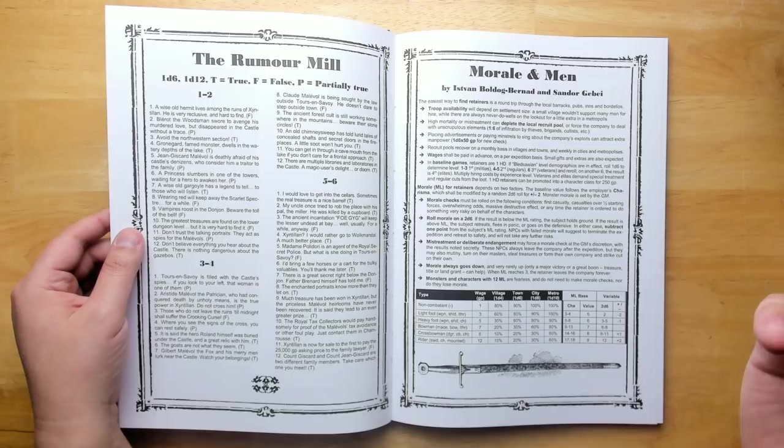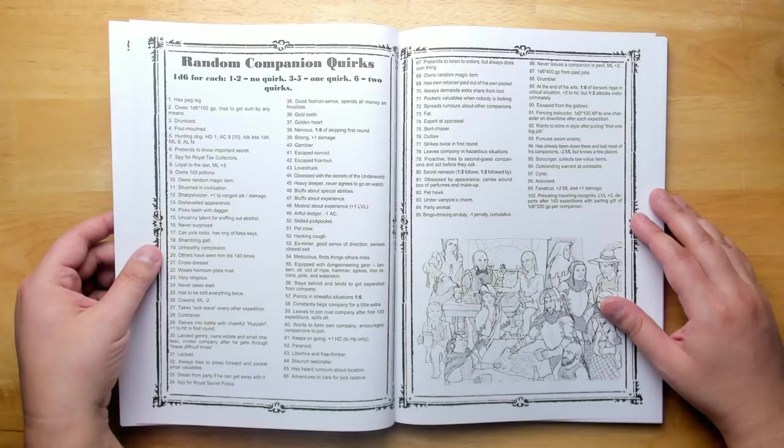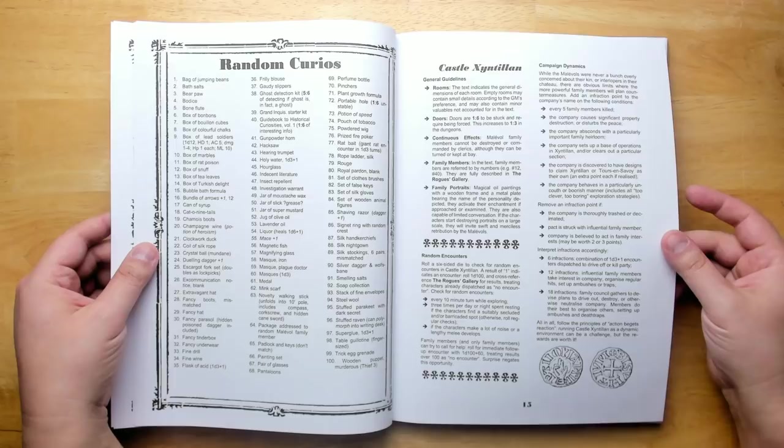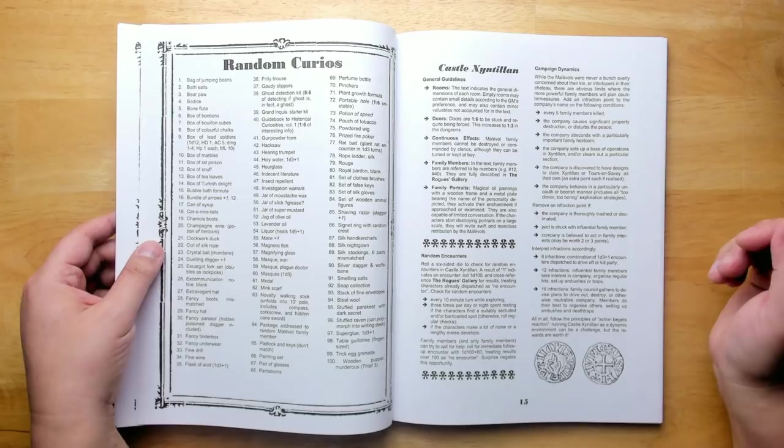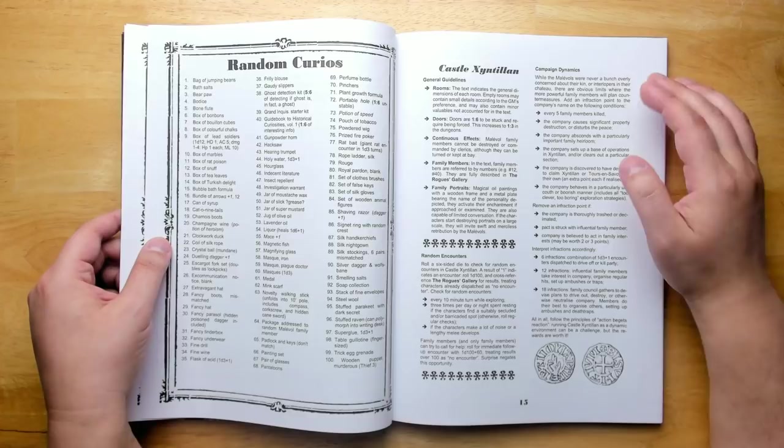The rumor mill has 36 possible rumors that could be true, false, or partially true. Some rules for running morale, because hirelings are a part of any old school dungeon campaign. We have some random companion quirks that you can roll up to give your hirelings extra flavor. Some random curios. And then we start getting into Castle Xyntillan itself, along with some important features that you should know ahead of time. So the general guidelines for how the rooms work, but really the campaign dynamics are what stand out.